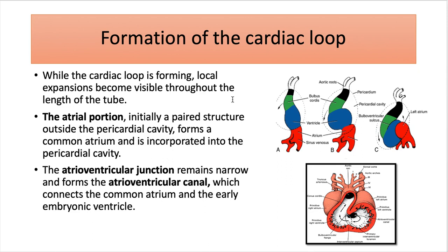While the cardiac loop is forming, local expansions become visible throughout the length of the tube. The arterial portion initially appears as a structure outside the pericardial cavity, forming a common atrium that is incorporated into the pericardial cavity when bending starts to take place. The atrioventricular junction remains narrow and forms the atrioventricular canal — a common canal connecting the common atrium and the early embryonic ventricle.